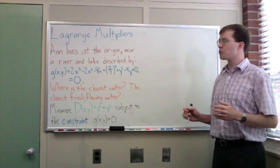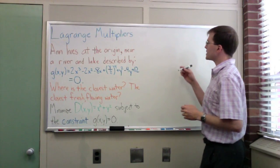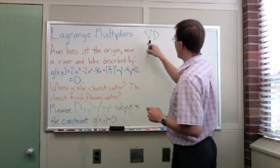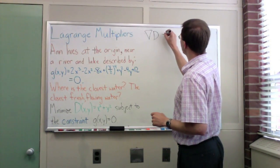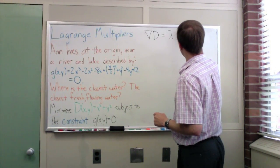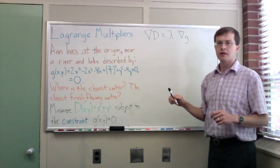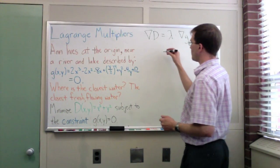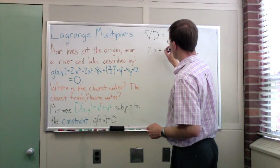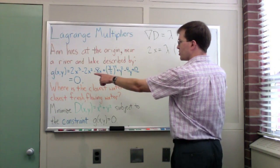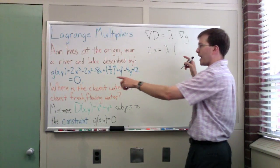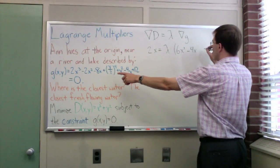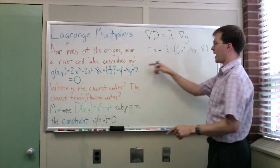Remember how Lagrange multipliers works. It's a vector equation. And what we say is that the gradient of the function that we want to maximize or minimize, the gradient of capital D for us, is equal to that scalar function lambda times the gradient of the constraint function. So this is a vector equation. We can write it in x and y components. And the x component will come out to be that 2x equals lambda times gradient of g. This is the x component, the partial with respect to x. What will it be? 6x squared minus 4x minus 8. That's the x partial of g.